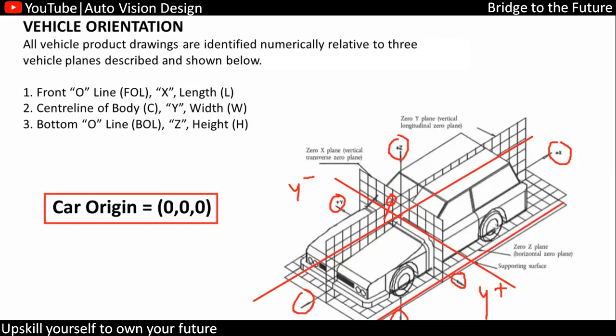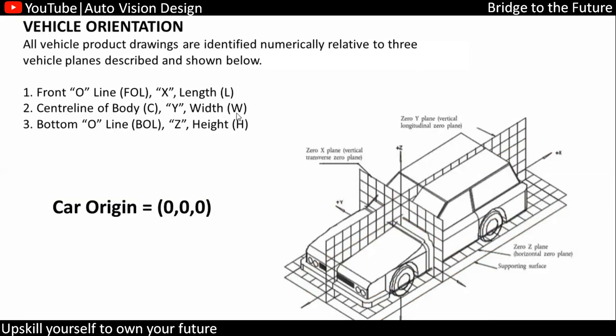Z is most of the time considered as zero at the ground level, or it might be at the axle of a particular wheel of the vehicle. This depends on the OEM — most of the time the origin will be inside the vehicle, but it can also be outside the vehicle; both options are available.